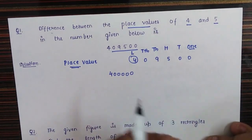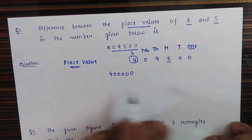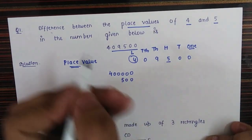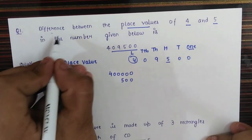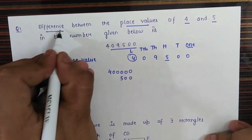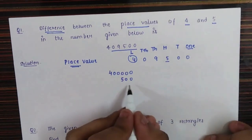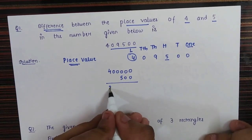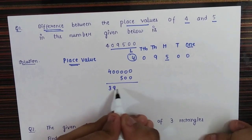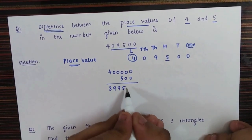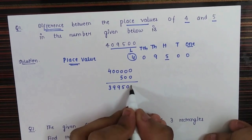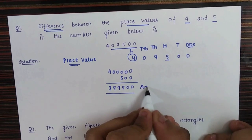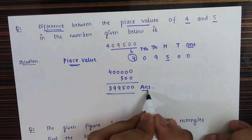For the digit 5, the place value would be 500. The question asks for the difference between these two place values, so it will be 4,00,000 minus 500, which equals 3,99,500. That is the answer for this question.